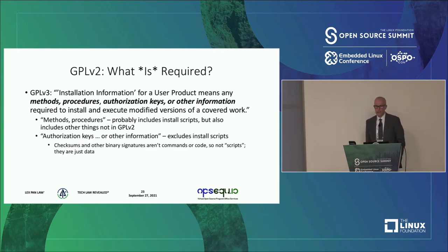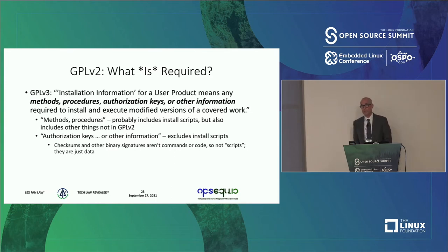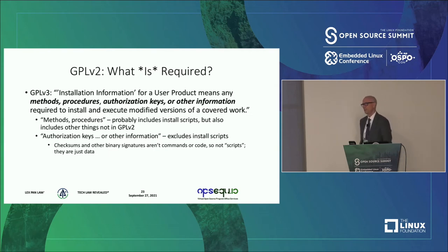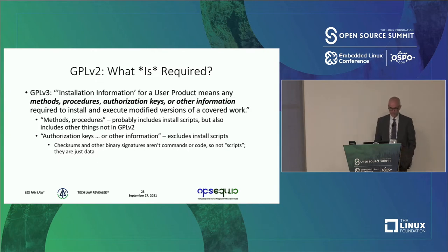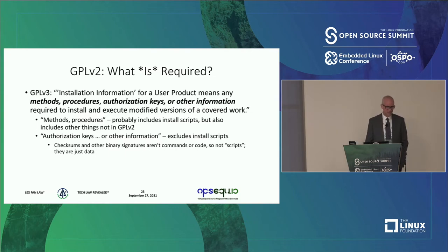GPL v3 has all these other things: methods, procedures, authorization keys, or other information. If you look at GPL v3, methods or procedures probably define things that might include a script, but probably include other things beyond scripts. An authorization key or other information as required in GPL v3 probably doesn't include a script. So GPL v3 is much broader in its application than GPL v2. I don't think one can interpret the use of the term script in GPL v2 to encompass an authorization key — that's just data, not necessarily a script.